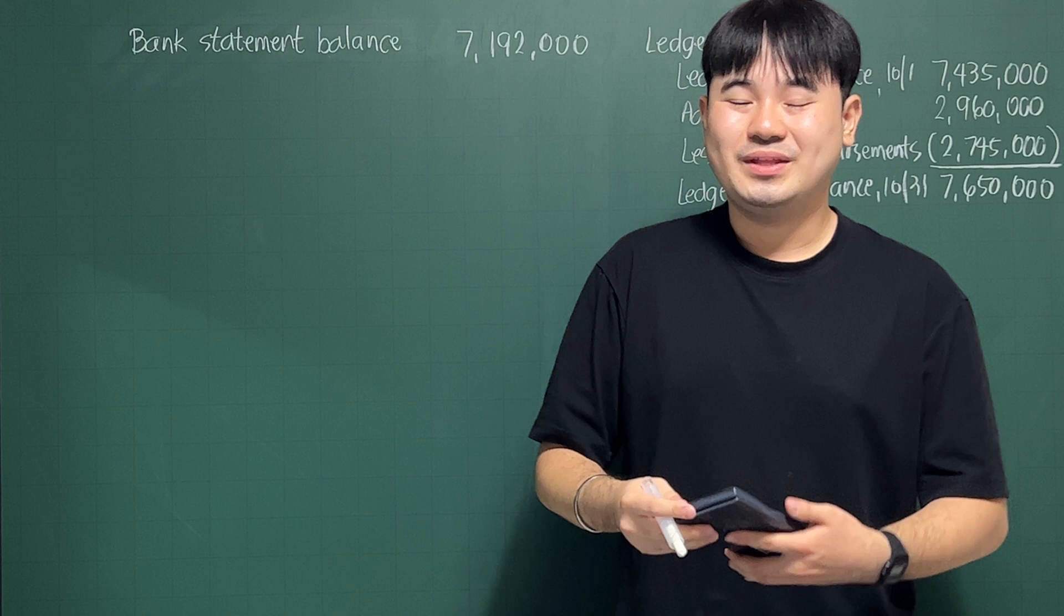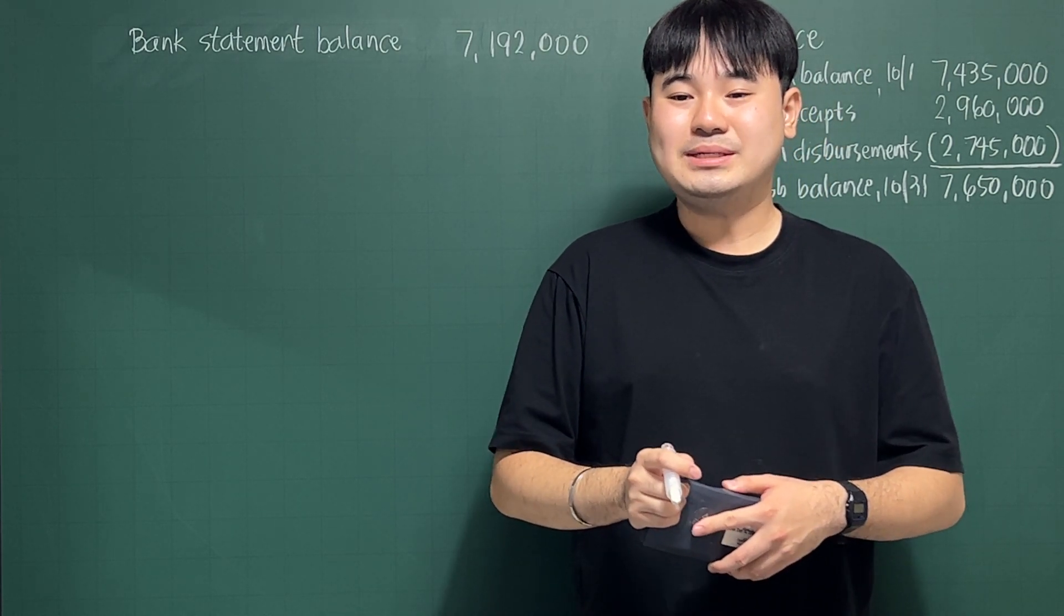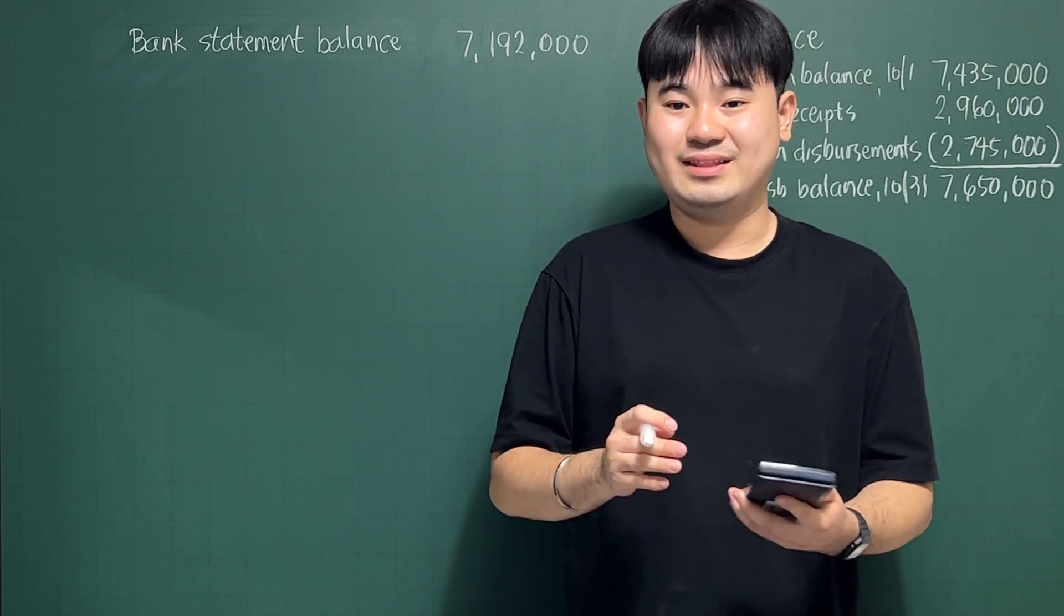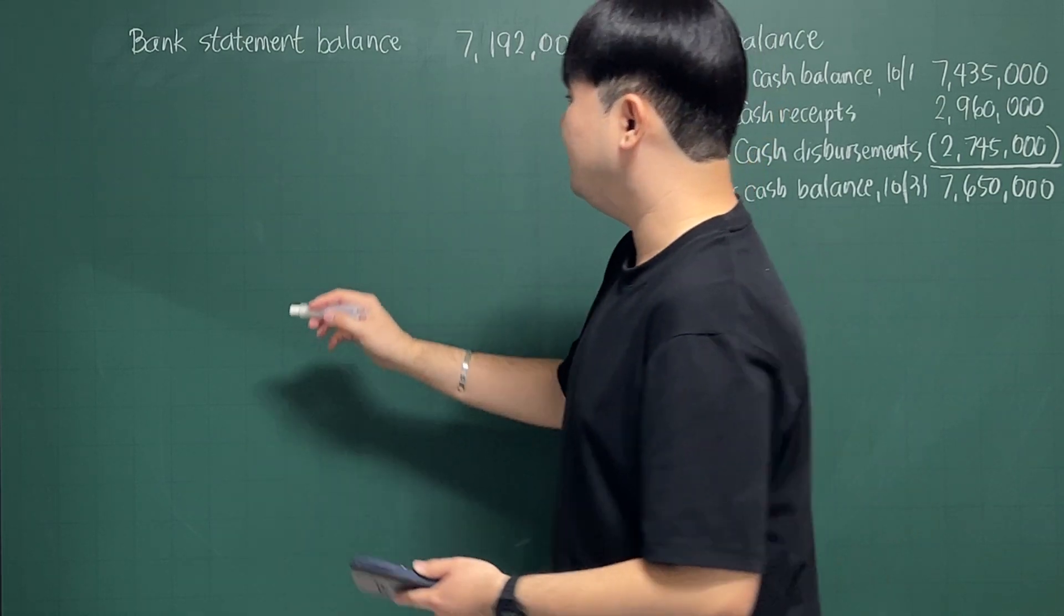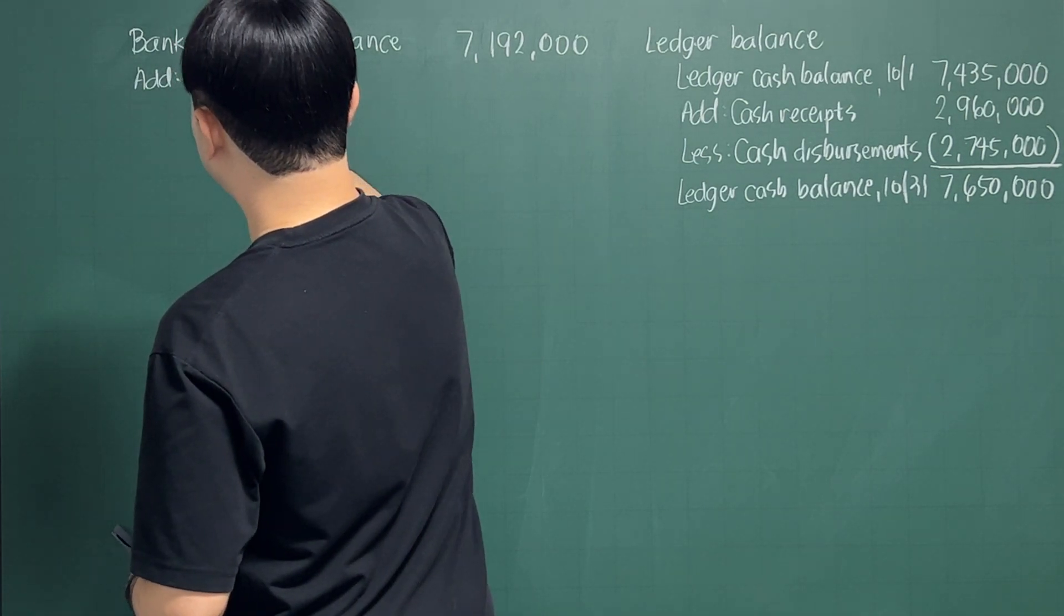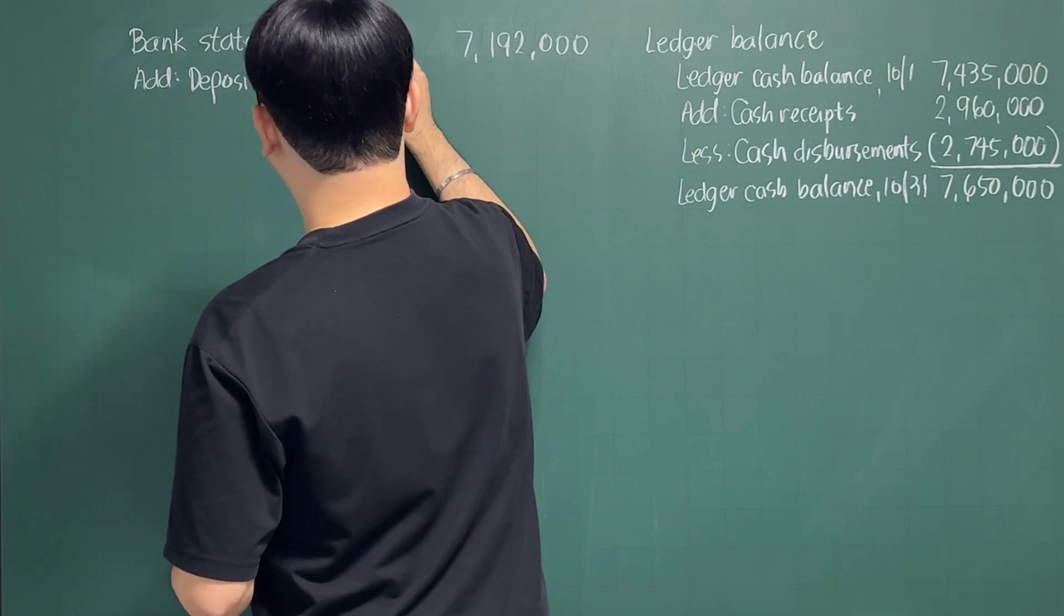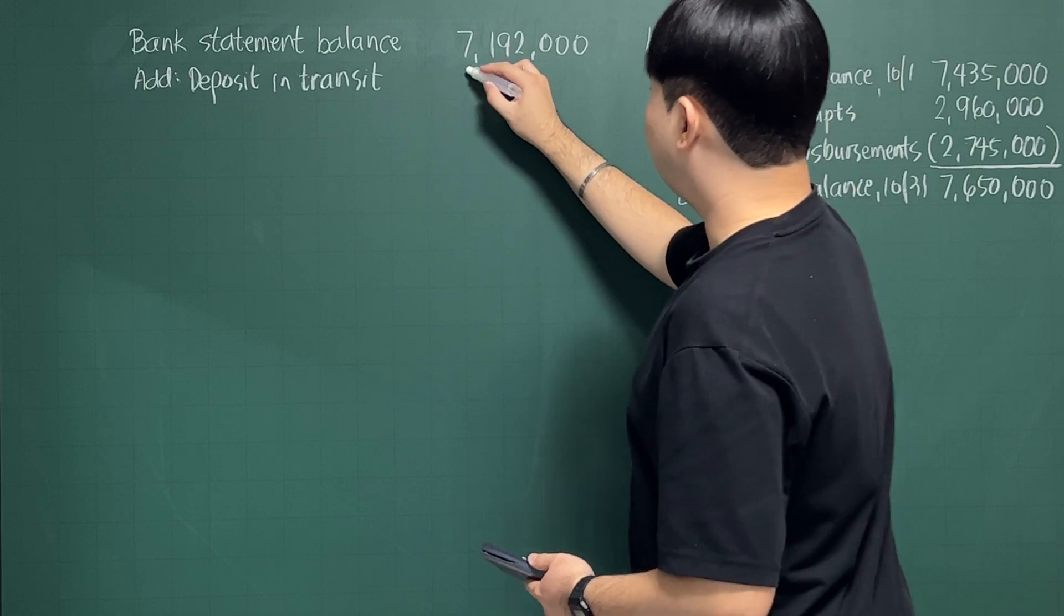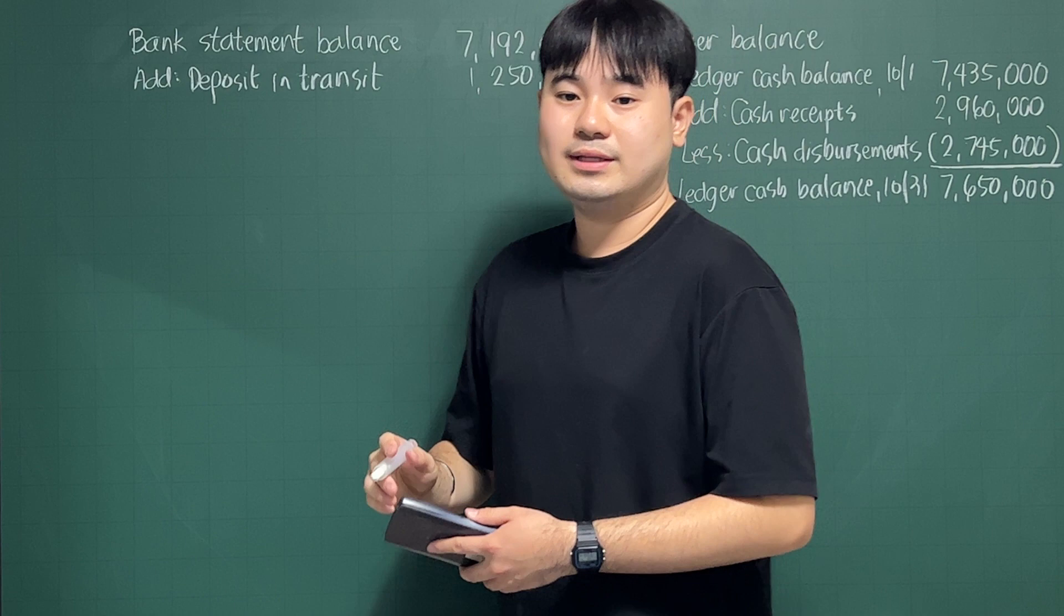Next bullet point. A deposit of $1,250,000 that was placed in the bank's night depository on October 31 does not appear on the bank statement. That is what you call a deposit in transit. So you add here your deposit in transit. So for your deposit in transit, that is $1,250,000. Okay, let's continue.